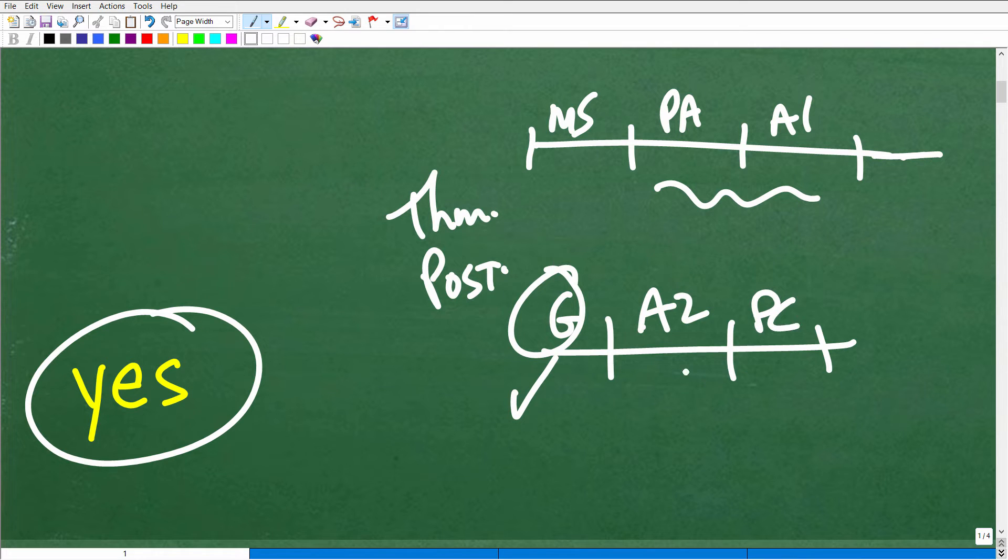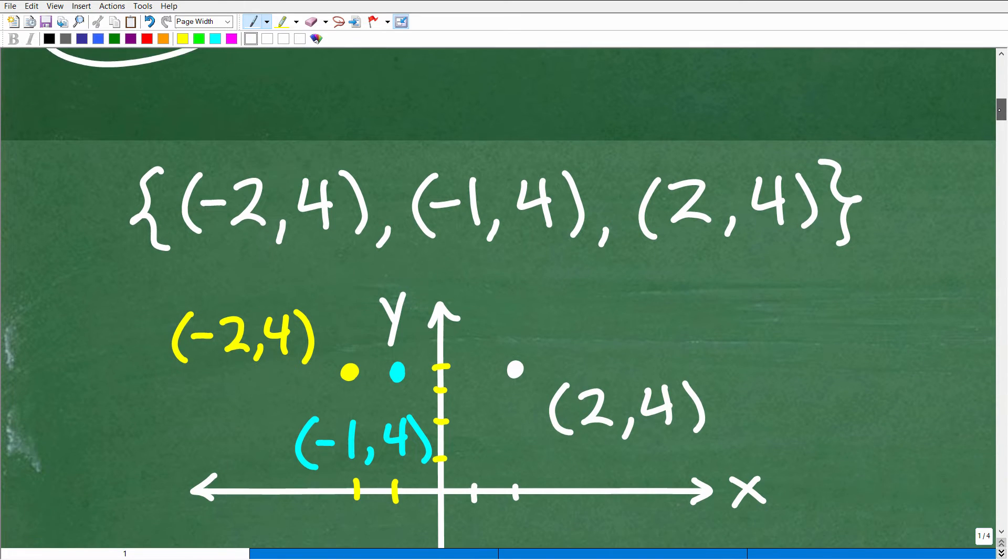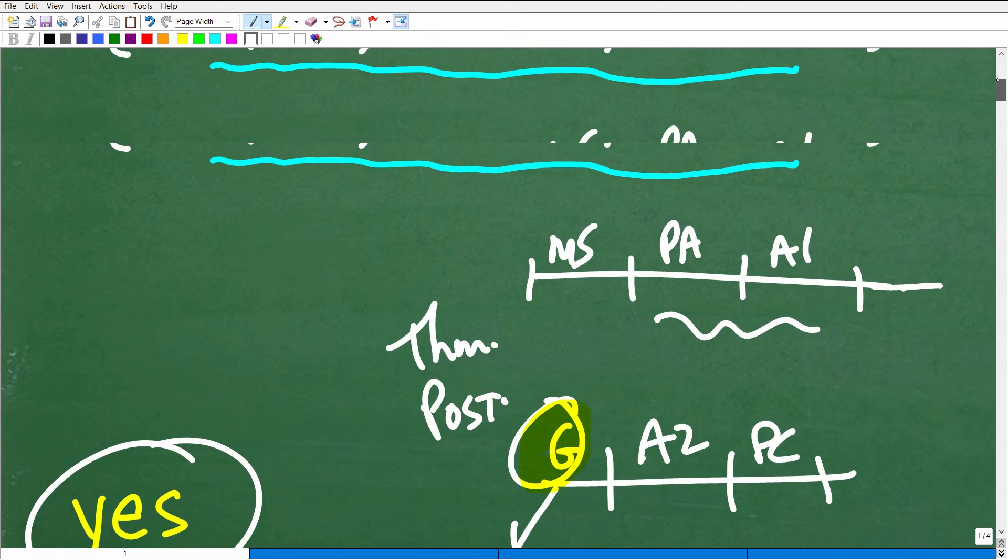and pre-calculus, which is even more like advanced algebra. So geometry in particular is filled with all kinds of new terms and vocabulary, and collinear happens to be one of those terms, right?